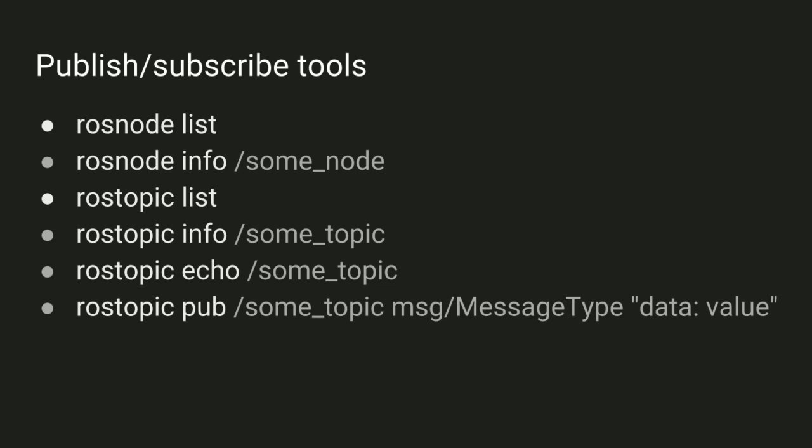There are some good command line tools for examining the structure of your nodes and topics. rosnode list will provide a list of all of the nodes that are running. And if you want to get more detailed information about the node you can use rosnode info and then provide the name of the node. This is particularly helpful because it'll tell you what topics that node is currently publishing to or subscribing to.